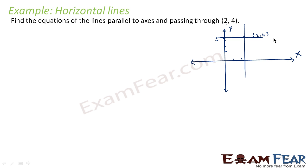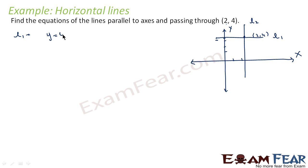This line is parallel to the x-axis, so we will call it l1, and this line is parallel to the y-axis, l2. For the equation of l1, we see that y is having a constant value — it is parallel to the x-axis and the value of y is always 4. So for line l1, the equation is y is equal to 4; if you see, this distance is always 4.